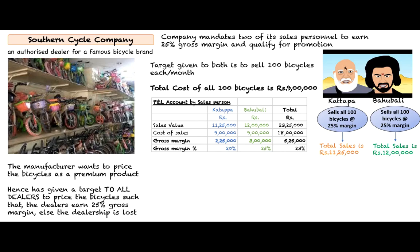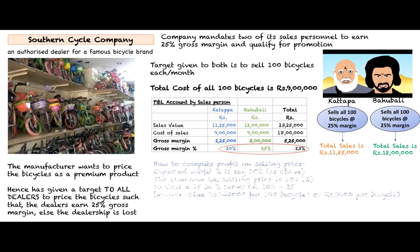The combined average margin is 23% on sales value. Bahubali is absolutely right — 25% margin achieved. But at the company level it is working out to only 23% because of the dip caused by Kattapa. So we need to be very careful when selling products. How do we correctly compute profit on selling price?